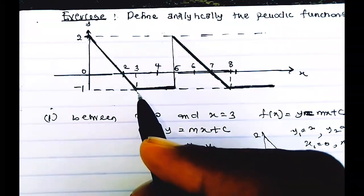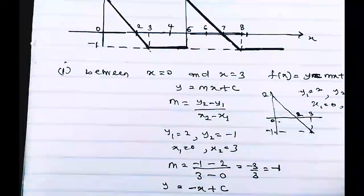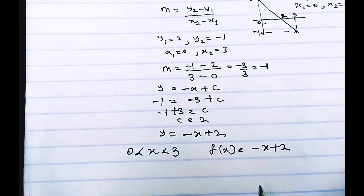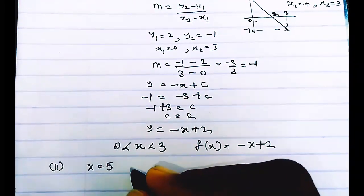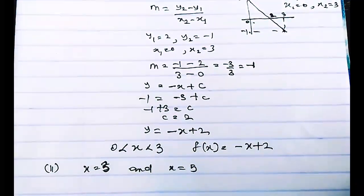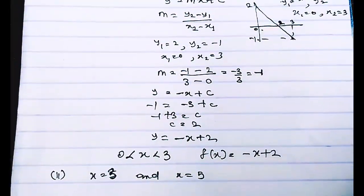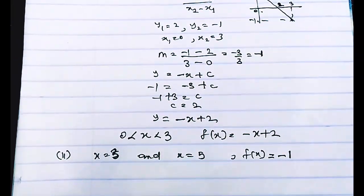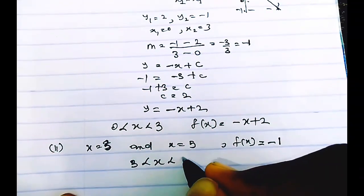Analyzing the graph between x = 3 and x = 5, this is a straight horizontal line — no calculation needed, just read off the value. Since this is a straight line with y = −1 throughout, Condition 2 is: between x = 3 and x = 5, f(x) = −1. We can express this as 3 < x < 5, f(x) = −1.